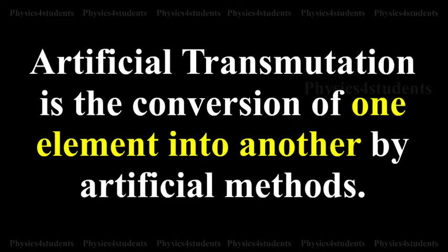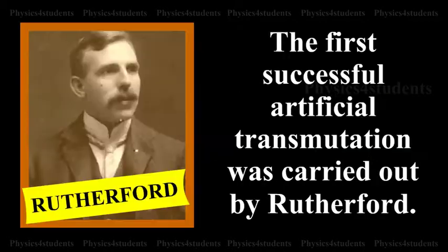Artificial Transmutation. Artificial transmutation is the conversion of one element into another by artificial methods. The first successful artificial transmutation was carried out by Rutherford.